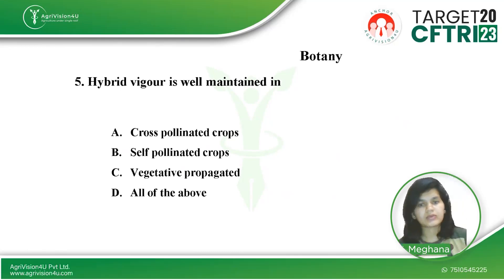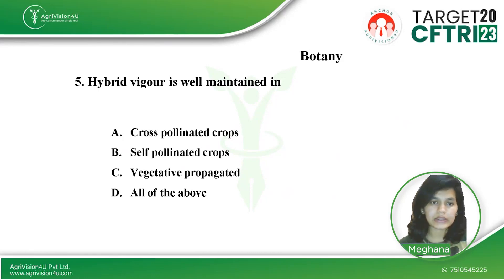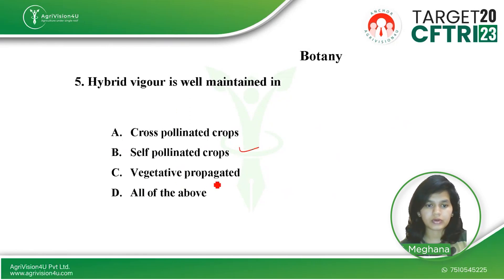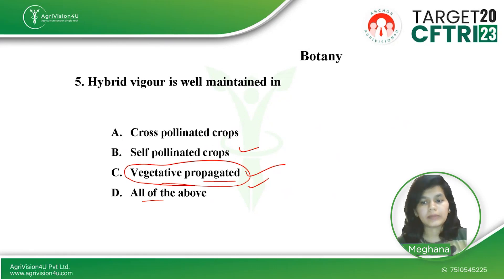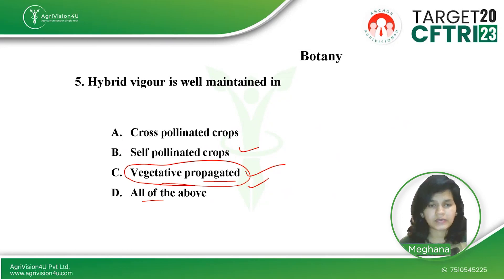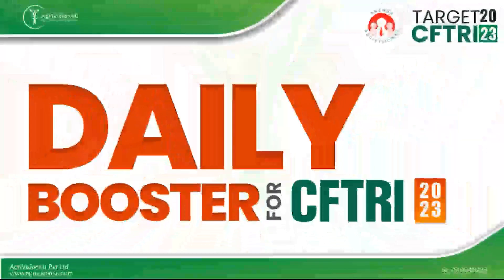The next question is from botany: hybrid vigor is best maintained in which type of crop? Option A is self-pollinated crops, Option B is cross-pollinated crops, Option C is vegetatively propagated crops, and Option D is all of the above. The correct answer is Option C — hybrid vigor is maintained in vegetatively propagated crops. Hybrid vigor refers to the increased performance of offspring over both its parents.